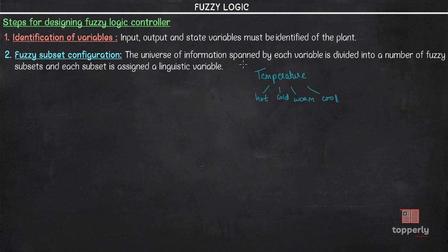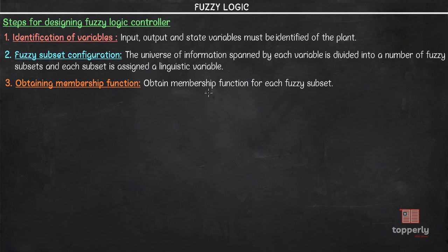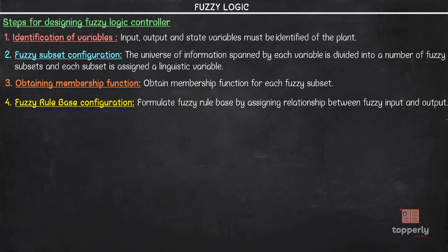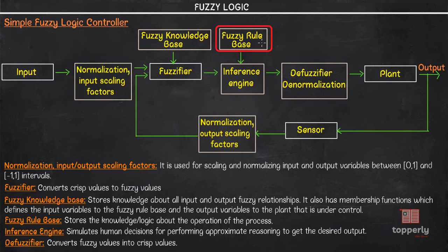It's important to remember that these fuzzy subsets should include all elements of that universe. Third, obtain the membership function for each fuzzy subset. Fourth, fuzzy rule base configuration: formulate the fuzzy rule base by assigning relationships between the fuzzy input and fuzzy output subsets. This forms the fuzzy rule base, which contains the required knowledge or logic about the operation of the process.